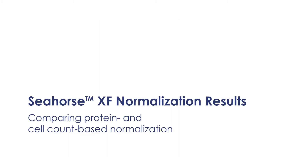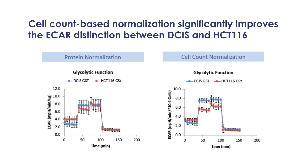The Seahorse data were normalized using total protein amount and cell counts. The measured glycolytic function showed no distinction in ECAR values between the two cell lines. However, the cell count normalization method showed clear separation between the two cell lines as well as significant reduction in standard deviation.